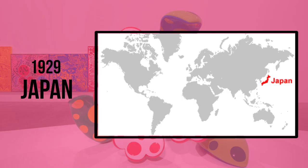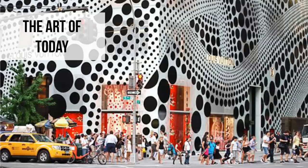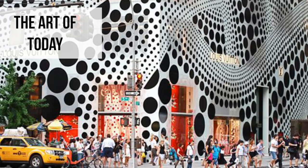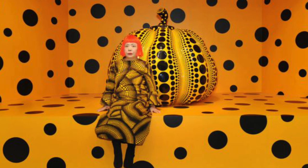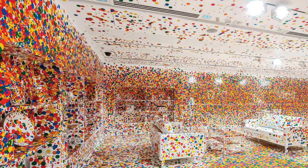Kusama was born in Japan in 1929. She is a contemporary artist, meaning she makes the art of today. You will find her work in museums and buildings and fashion. She is still alive and continues to make sculptures, paintings, and installations — work that takes up an entire room.